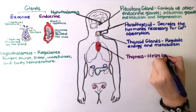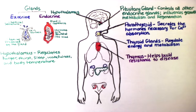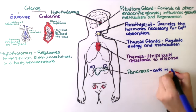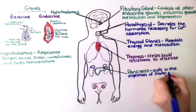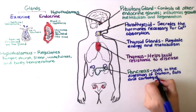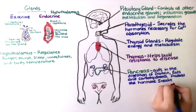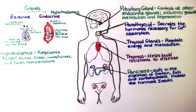The thymus helps build resistance to disease by allowing white blood cells to reproduce, mature, and fight infections. The pancreas aids in digestion of protein, fats, and carbohydrates. It produces the hormone insulin, which controls blood sugar levels.